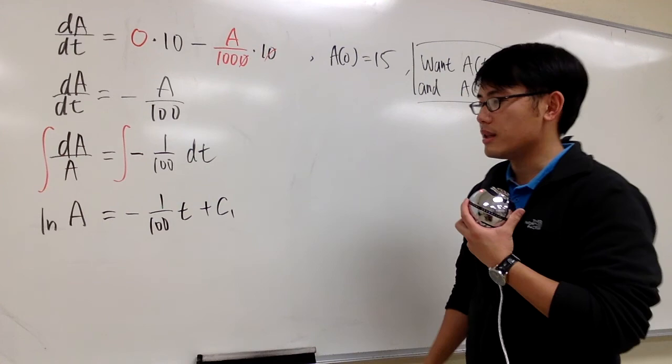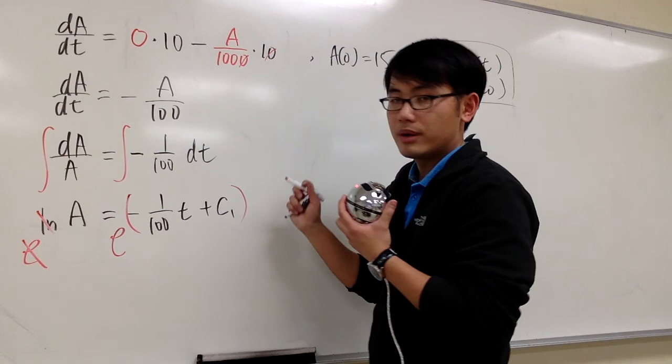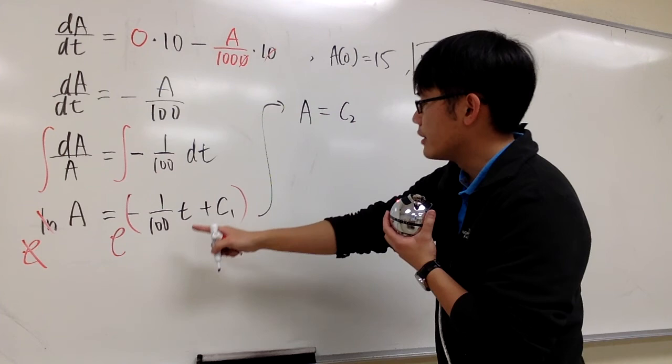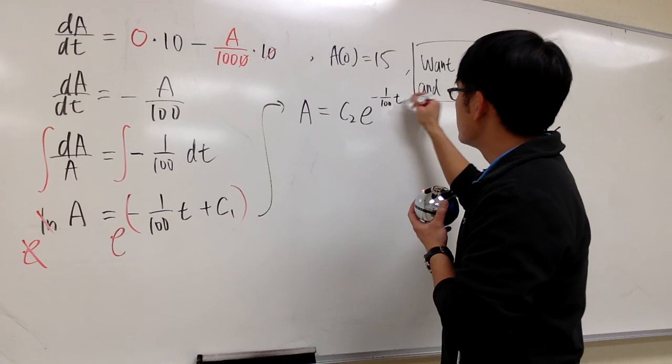And I will do e to that power, so they cancel, and we do e to this power. And we will have A equals to e to the C1, which is just another constant, let me call it C2. And we have the function part is e to the power, e to the negative 1 over 100 T. And that's pretty much it for the general solution.